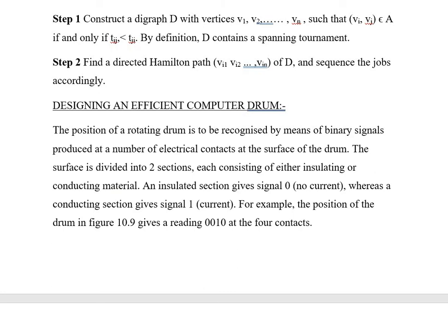Regarding the graphical interpretation of this problem: Construct a digraph D with vertices v_1, v_2, ..., v_n such that (v_i, v_j) is an element of A if and only if t_{ij} < t_{ji}. By definition, D contains a spanning tournament. Find a directed Hamiltonian path v_{i_1} v_{i_2} ... v_{i_n} of the digraph D and sequence the jobs accordingly.